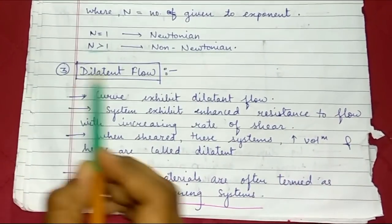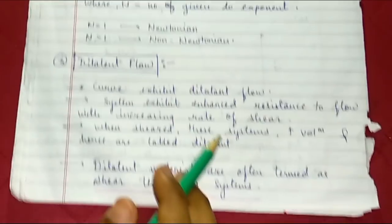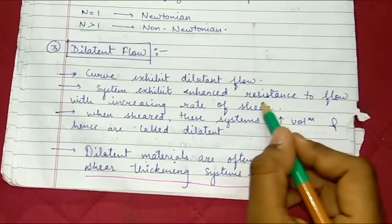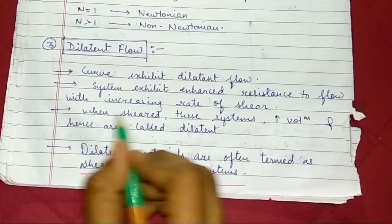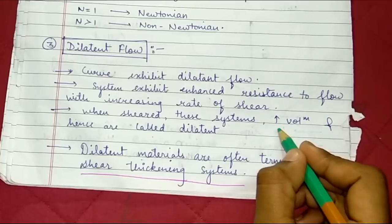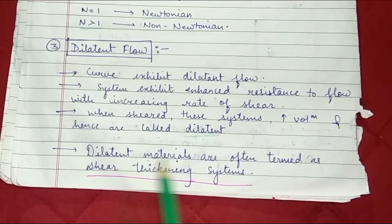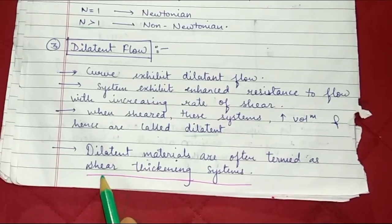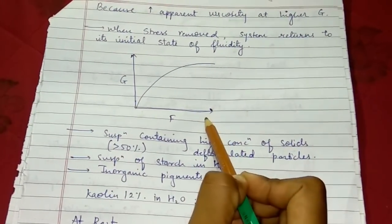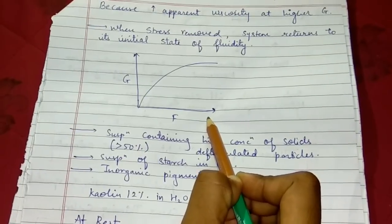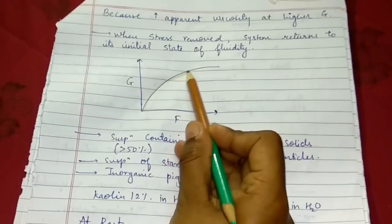Third type of flow is dilatant flow. Where curve exhibits dilatant flow, system exhibits enhanced resistance to flow with increase in rate of shear. If there is increase in rate of shear, there will be increase in volume, hence they are called dilatant. Dilatant materials are often termed as shear thickening system. This curve represents dilatant flow. If there is increase in rate of shear, there will be increase in shearing stress.